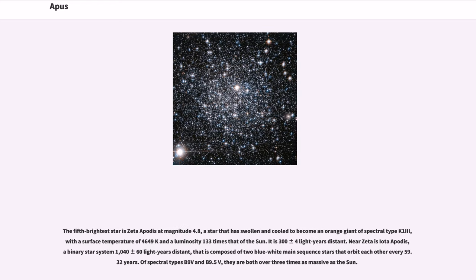The fifth brightest star is Zeta Apodis at magnitude 4.8, a star that has swollen and cooled to become an orange giant of spectral type K1 III, with a surface temperature of 4,649 K and a luminosity 133 times that of the Sun. It is 300 plus or minus 4 light-years distant. Near Zeta is Iota Apodis, a binary star system 1040 plus or minus 60 light-years distant, that is composed of two blue-white main-sequence stars that orbit each other every 59.32 years. Of spectral types B9V and B9.5V, they are both over three times as massive as the Sun.